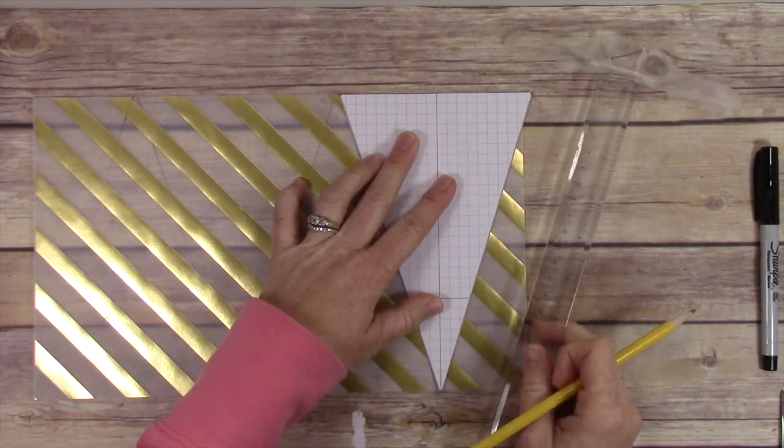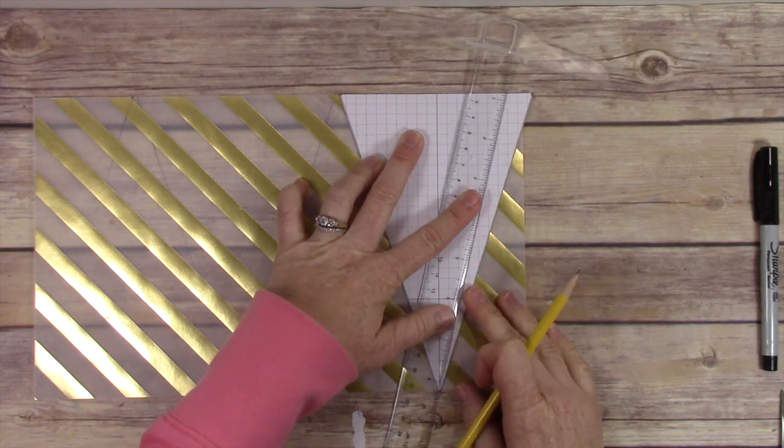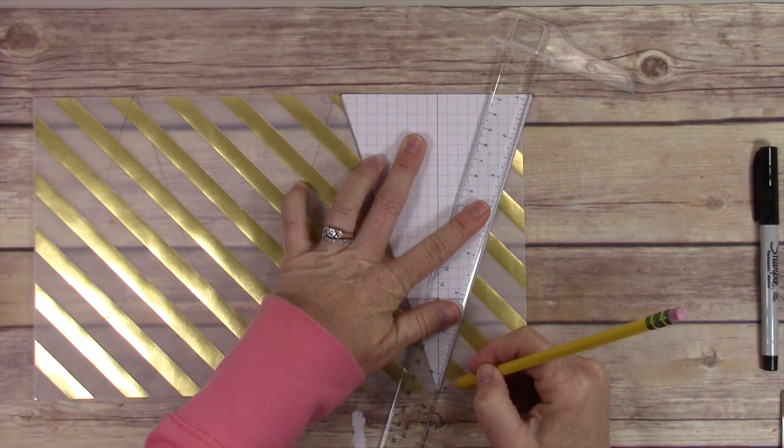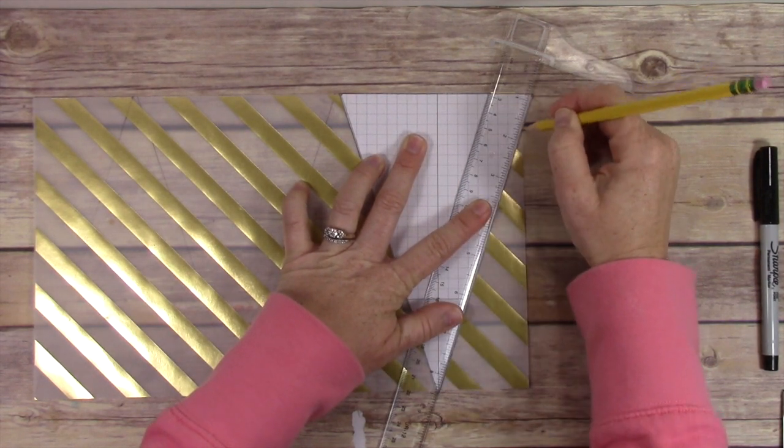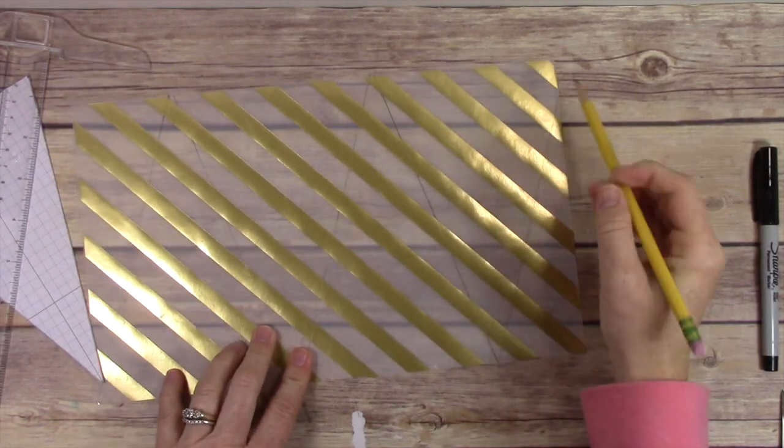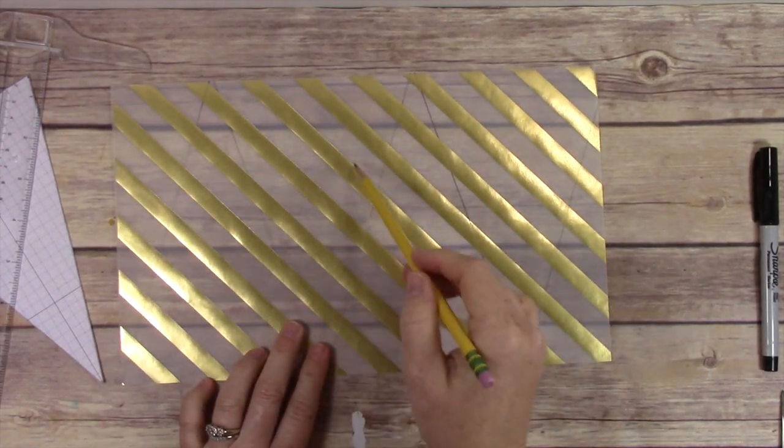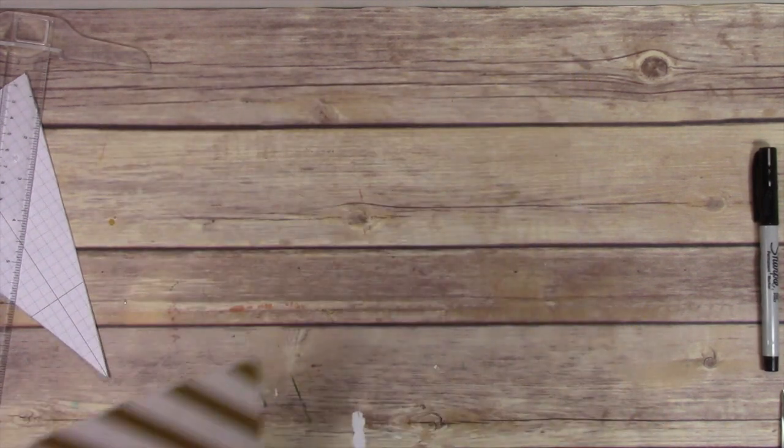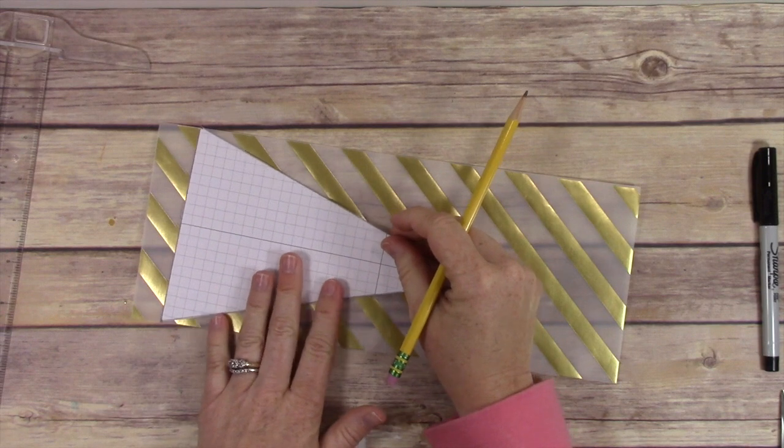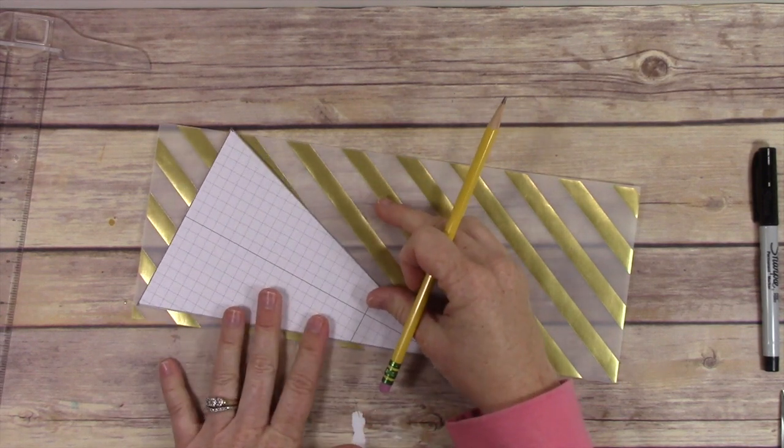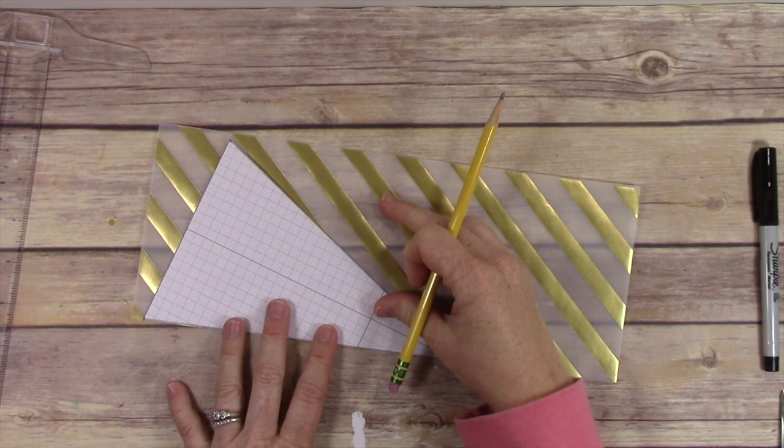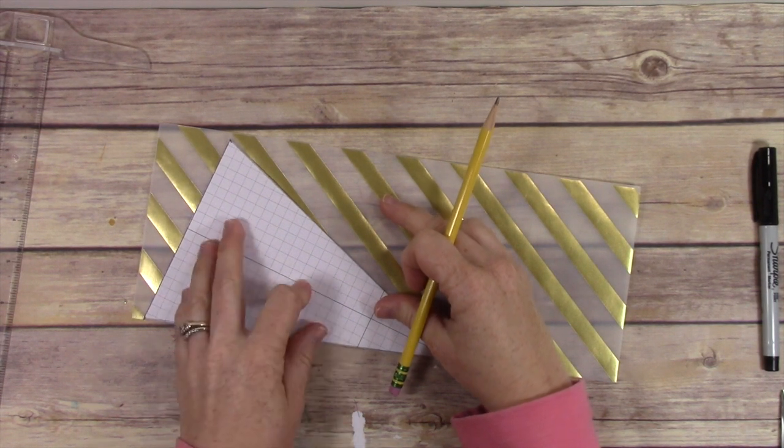I just went ahead and lined up the edge and made my line anyway, and then I just adjusted and cut it off. So that gives me four. Now I have the other little piece that I cut off and I'm going to be able to get two out of this piece.